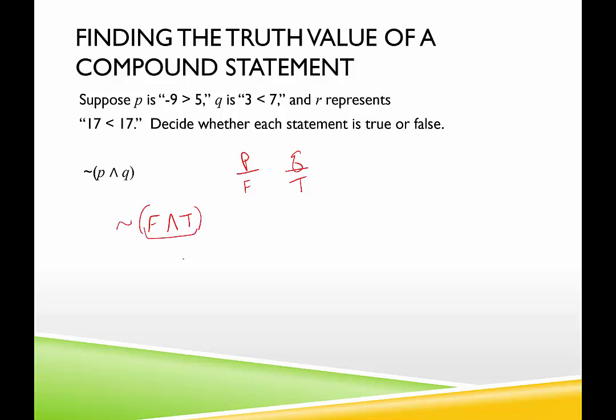So inside the parentheses is false and true. False and true for a conjunction to be true, both parts need to be true. So this conjunction is false. So we would say not, and then we have a false statement. Well, the opposite of a false statement would be a true statement. So this would be true.